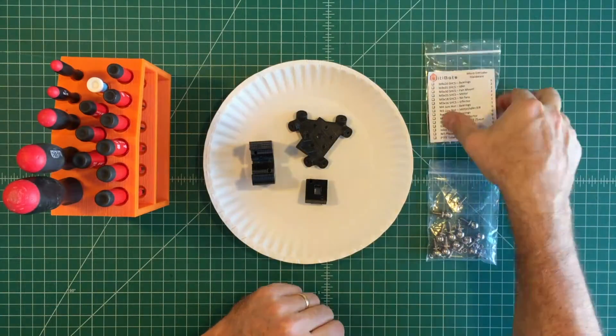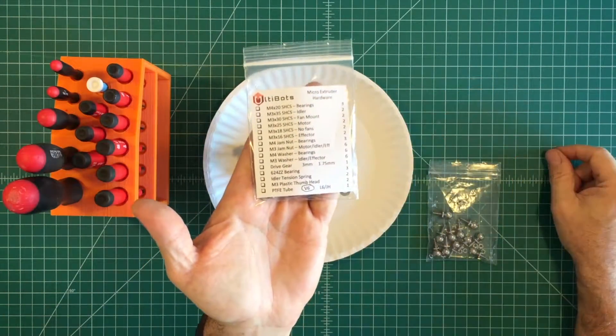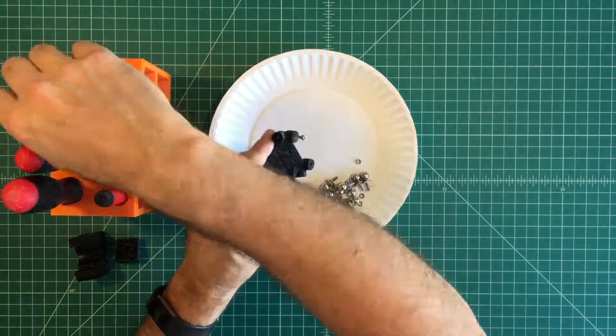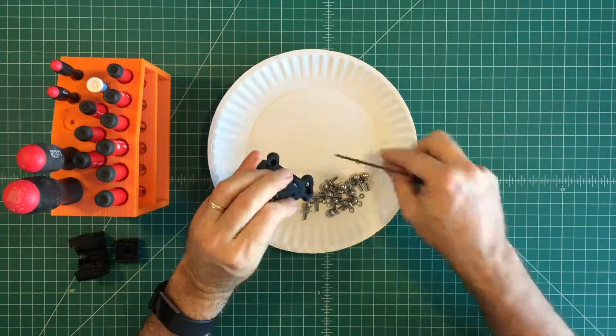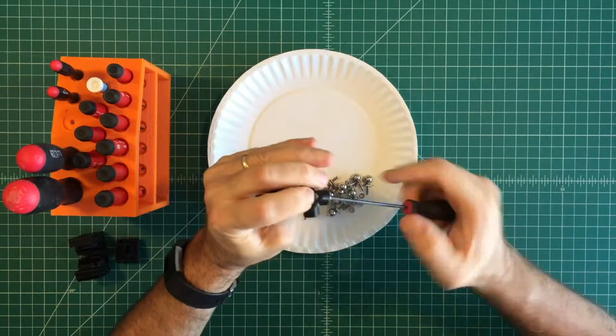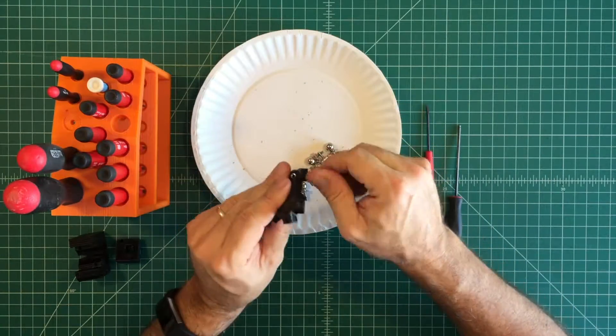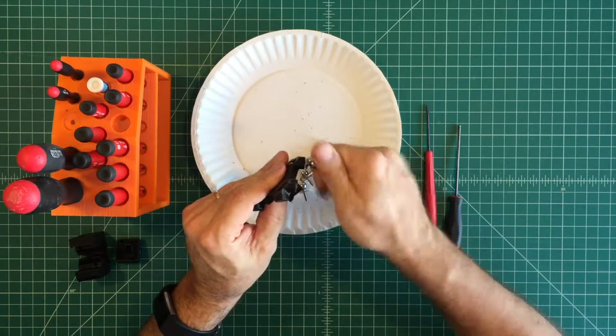In this section you will add hardware to the Micro Extruder plastic parts. Start by adding mag balls to the effector. Prior to adding mag balls to the effector use an M3x12 screw to pre-draw the M3 nuts into the traps. Once complete screw in the mag balls finger tight.